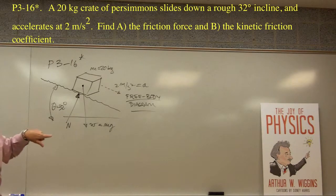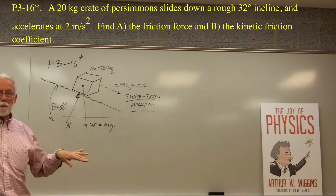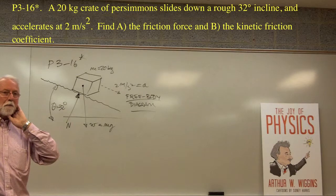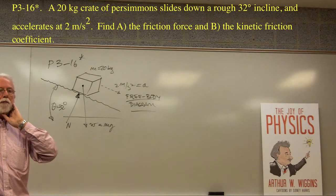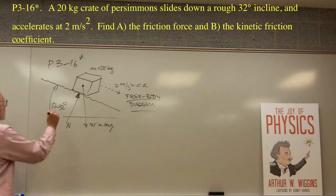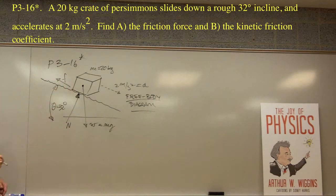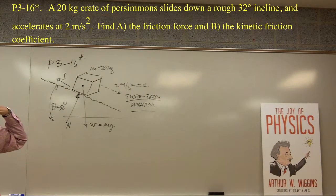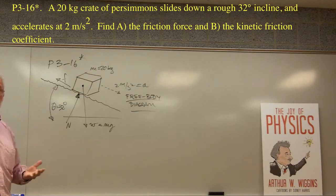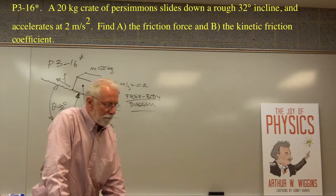This is a rough plane, so it's frictional. There's a frictional force along the surface of the plane. Friction always opposes motion — motion is down the plane, so the friction force points up the plane. We usually call that small f. So we have frictional force, normal force, and weight. Nobody's pulling the crate, so there are no other forces.